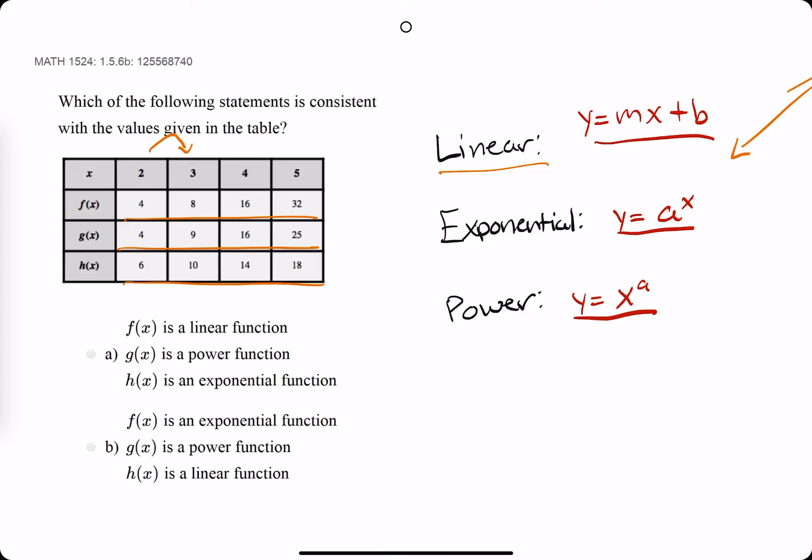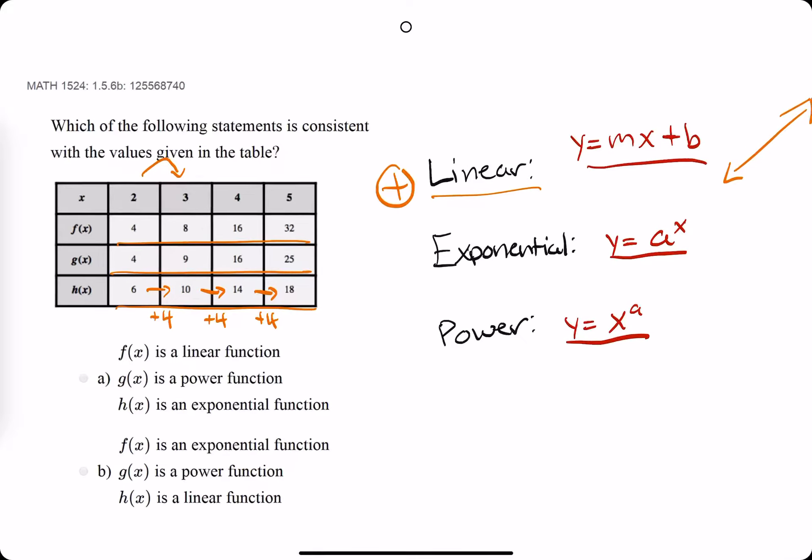But rather, when we look at option h, from 6 to 10, that's plus 4. 10 to 14, plus 4. 14 to 18, plus 4. So you're adding the same amount every time. That's the big key with linear functions.